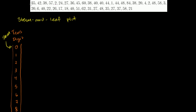Let's say I want to write 35. So 35 has a tens digit of 3, so I'll put a 5 right next to the 3. That tells me that 35 is one of my numbers. Then I have 42 — I'm writing the ones digit as leaves. Then 38: I have a 30, so I'm going to write an 8 next to the 3. So I have a 35 and a 38 — I'm just writing the ones digits within the 3 stem, within the 30s bucket.